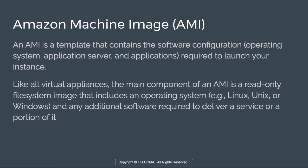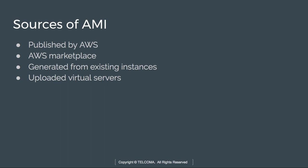The main component of AMI is a read-only file system image that includes an operating system — Linux, Unix, or Windows — and any additional software required to deliver a service. There are four sources of AMIs: published by AWS, AWS Marketplace, generated from existing instances, or uploaded virtual servers. AWS publishes AMIs with various versions of different operating systems like Linux and Windows. AWS Marketplace is an online store where you can buy and start using software and services without needing to install software or deal with license agreements repeatedly.